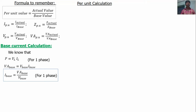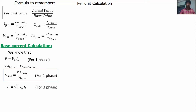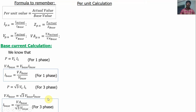If actual value and base value are given, we can calculate the per unit value using the first formula. For a three-phase system, power equals root 3 times V_L times I_L, so VA base equals root 3 times V base times I base, and therefore I base equals VA base divided by root 3 times V base. This formula is used for the three-phase system when VA base and V base are given to calculate I base.